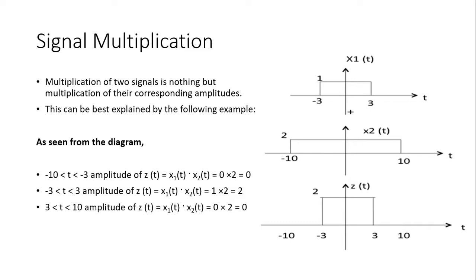Now for signal multiplication — since you now have a good grip on signal addition and subtraction, we repeat the same approach. The multiplication of two signals is nothing but the multiplication of their corresponding amplitudes. In signal multiplication we are taking care of the magnitude, and yes, during multiplication we are also taking care of the location of each signal.